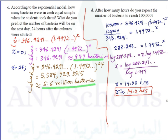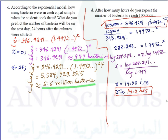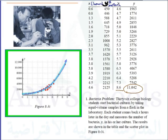To check, substitute x equals 14 back into the original equation and you should get approximately 100,000 for the bacteria population. That's it for problem number 1 about the population of bacteria.